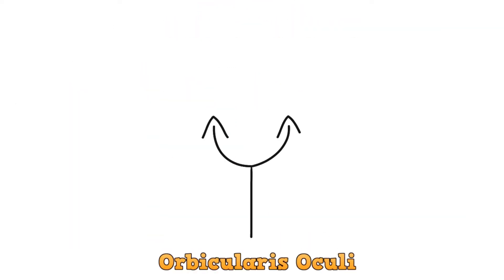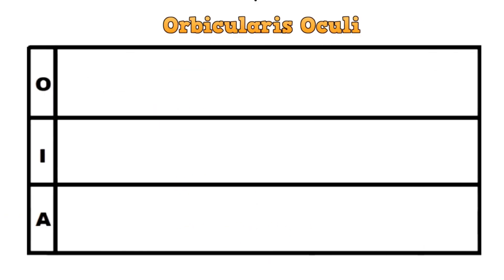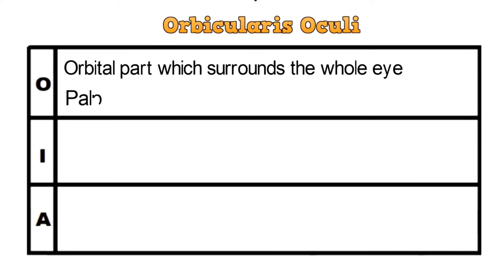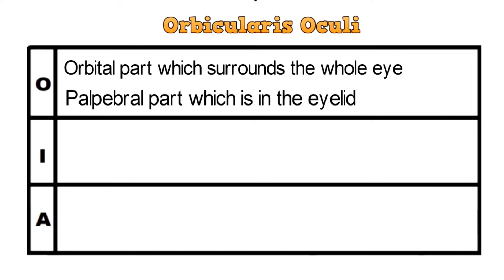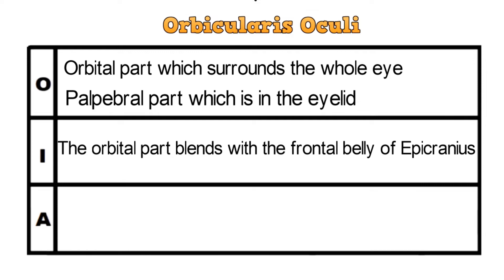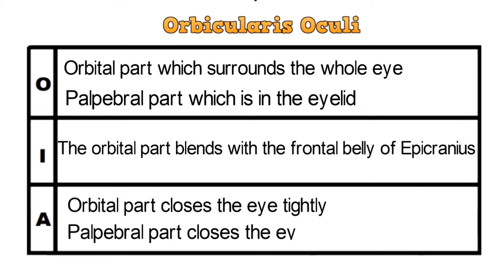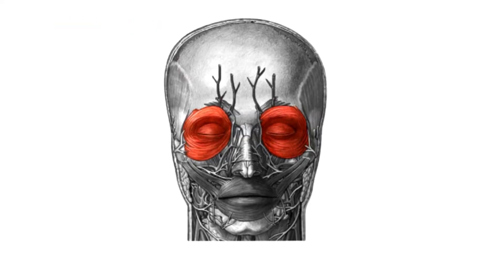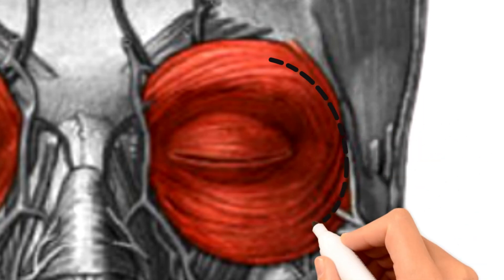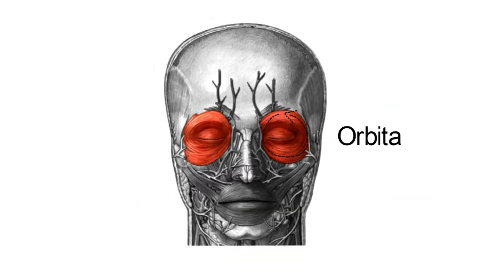The next muscle is the orbicularis oculi. This muscle also has two parts: the orbital part and the palpebral part. The orbital part is the one which surrounds the whole eye, and the palpebral part is the one which is in the eyelid. The orbital part blends with the frontal belly of the epicranius. The action of the orbital part is to close the eye tightly, and the palpebral part closes the eye gently. So this is the orbicularis oculi — this part that surrounds the whole eye is the orbital part, and this part in the eyelid is the palpebral part.